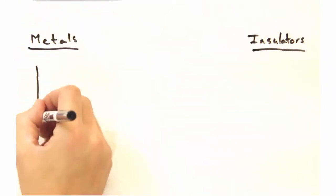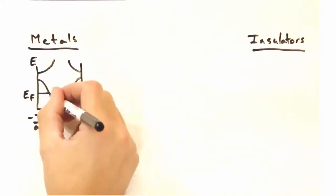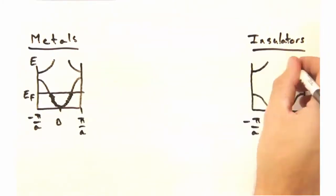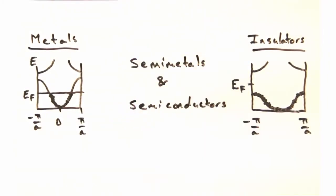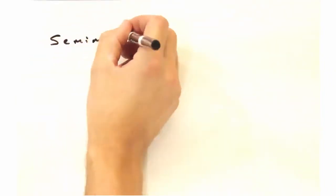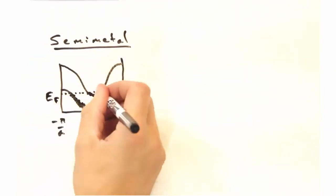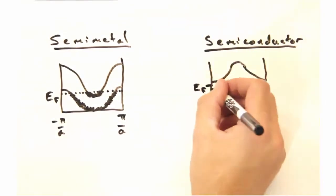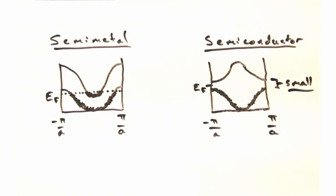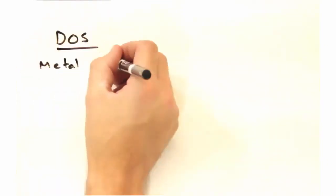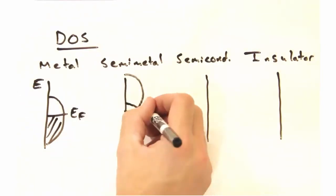On the two extremes, we have metals and insulators. In between, we have semi-metals and semiconductors. And the shading along the bands indicates the occupied states? You got it. All right. We can also show this in terms of the density of states.